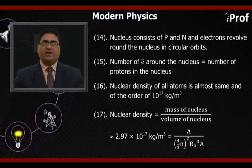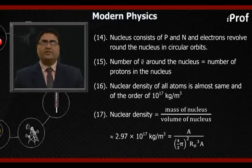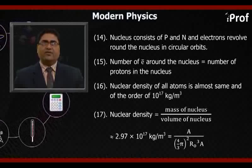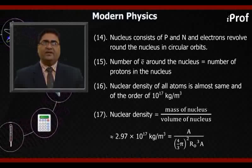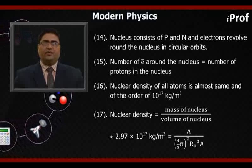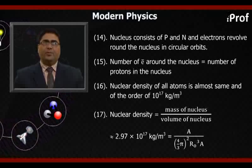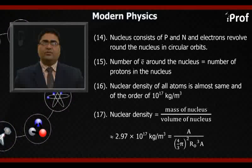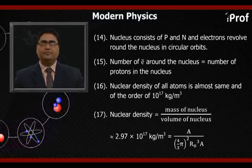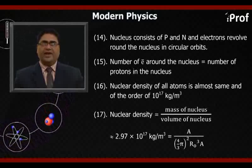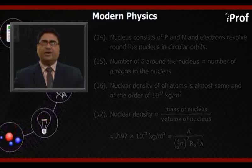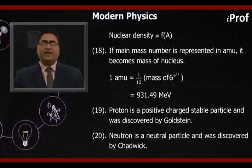Sixteenth, nuclear density of all atoms is almost same and of the order of 10^17 kg per meter cube. Seventeenth, nuclear density equals mass of nucleus divided by volume of nucleus approximately equals 2.97 × 10^17 kg per meter cube. Nuclear density equals A divided by (4/3)πR₀³A. Nuclear density is not a function of A, that is mass number.